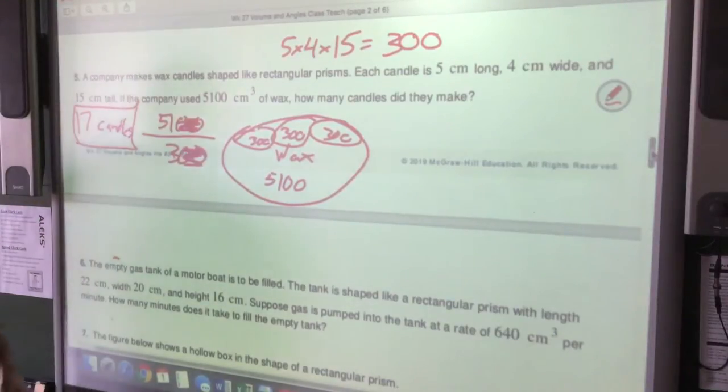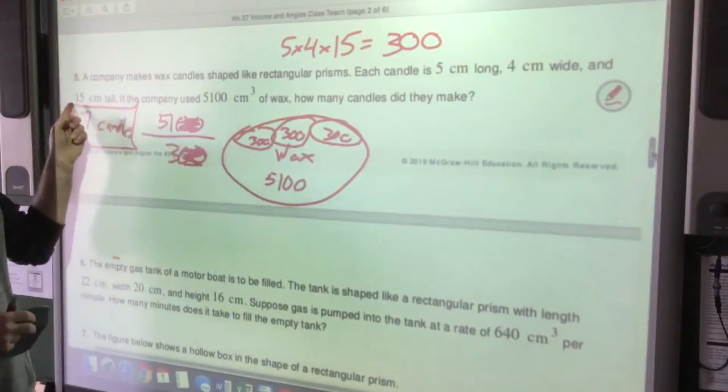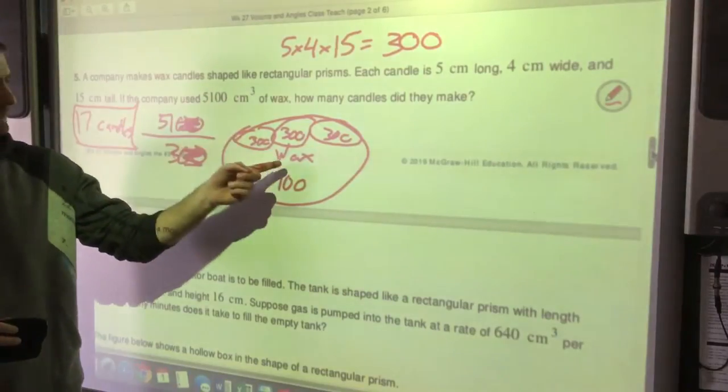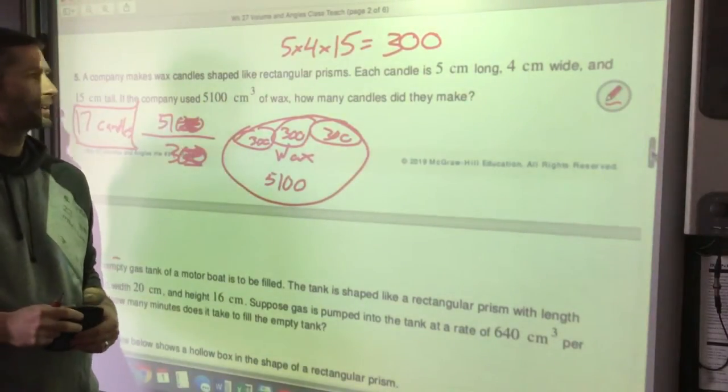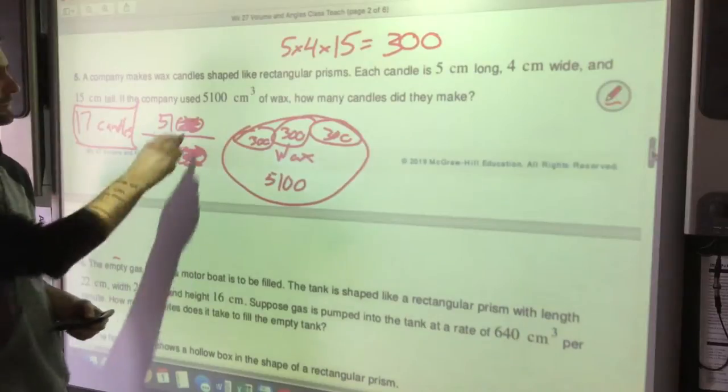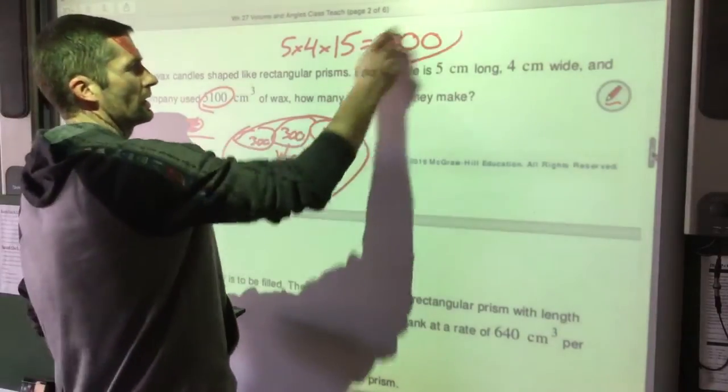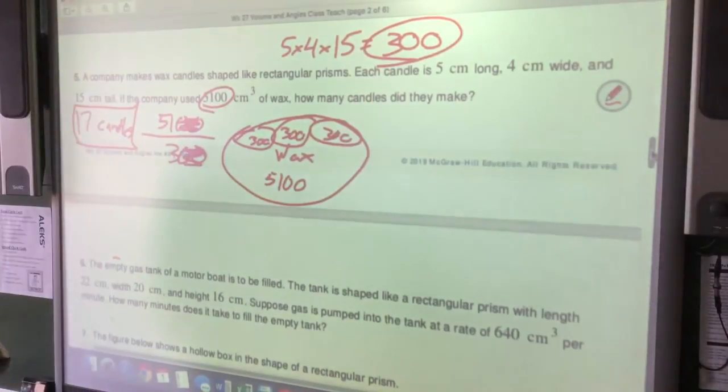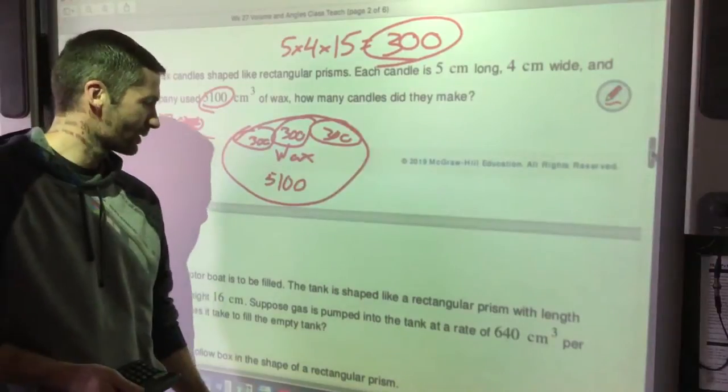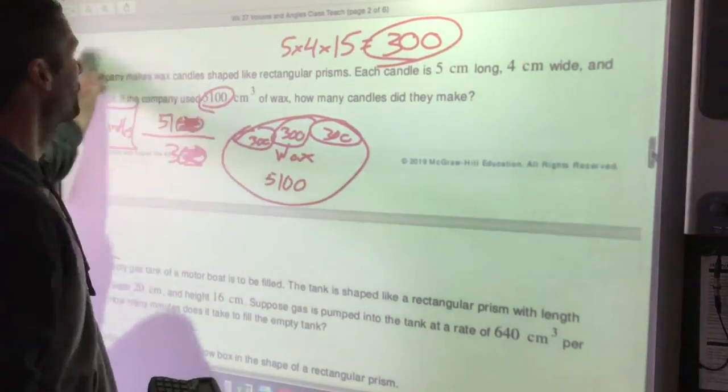When I'm finished, I want to check to make sure that makes sense. Would it make sense to make 17 candles? Yeah, out of that. If you would have multiplied by accident and done that times that, you're going to get an answer like 1.5 million. That doesn't make sense. Make sure we have answers that are reasonable. Always, always, always.